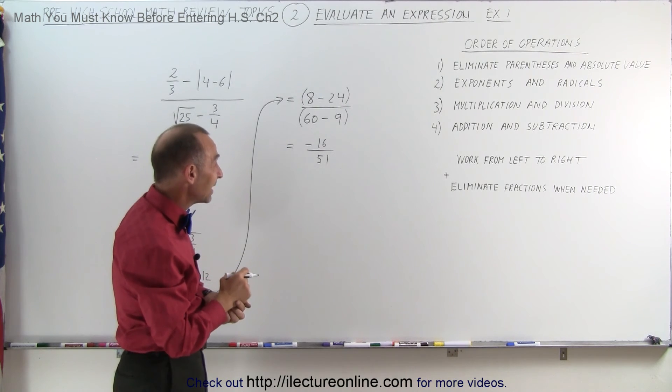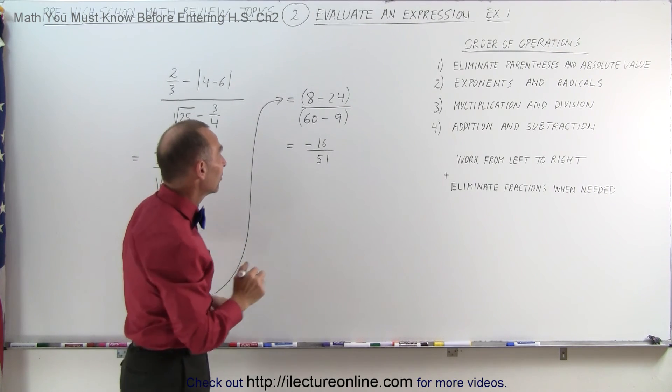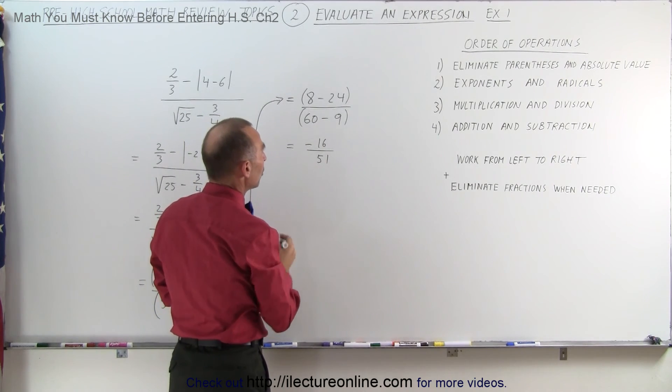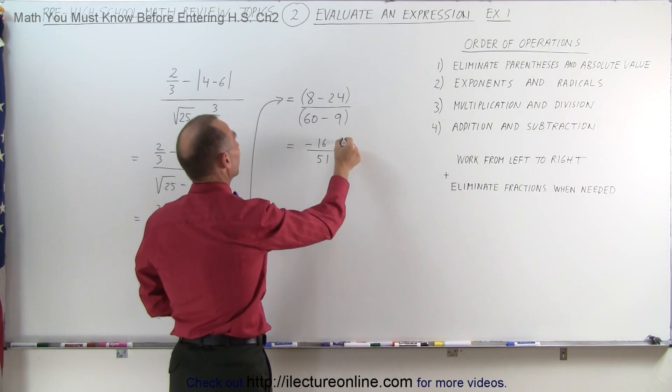Finally we have -16 over 51. The question is, is that divisible? Well, I don't think so. Let's see, we can divide it by 2, we can simplify it by dividing the numerator and denominator by 2, or by 3, or by 4, and so that looks like it's the simplest form.